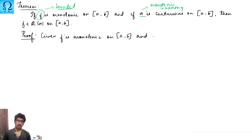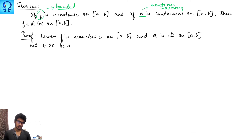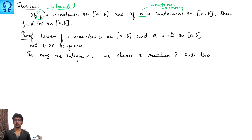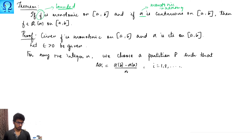Given: f is monotonic on the interval [a, b] and alpha is continuous on [a, b]. Let epsilon be a given small positive quantity. For any positive integer n, we choose a partition P such that delta alpha i equals alpha of b minus alpha of a, divided by n, where i runs from 1 to n.